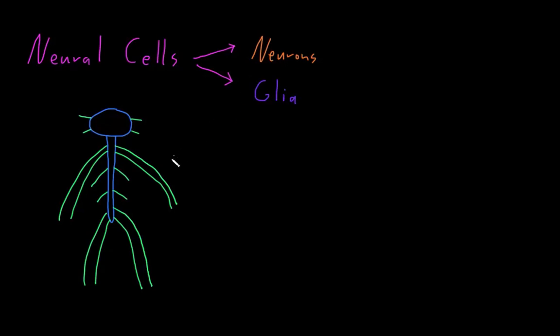Calling neurons nerve cells is a little problematic because these structures in the peripheral nervous system called nerves are made up of neurons, but they also contain glial cells and a number of other cells that aren't neural cells at all. However, you'll often hear people refer to neurons as nerve cells because that was the traditional name for them.